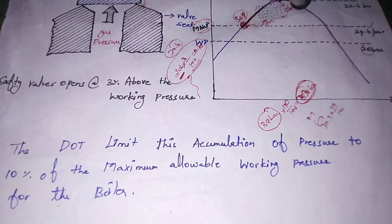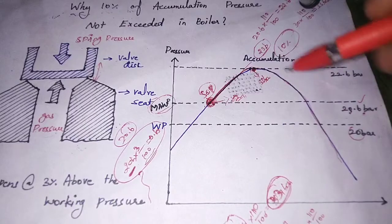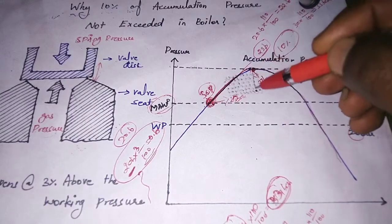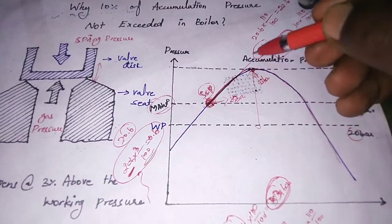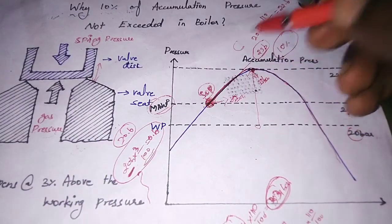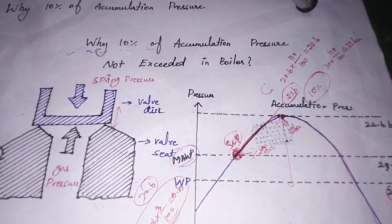If the 10 percent accumulation pressure is exceeded, the safety valve will be damaged. The safety valve can only withstand pressure within the accumulation pressure region; above that region it will be damaged. Now you know all about accumulation pressure — we'll meet in the next video, thank you.